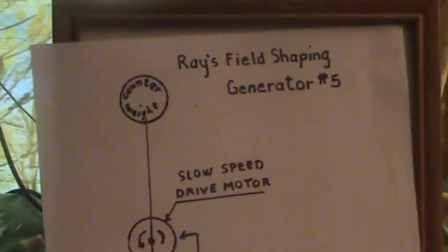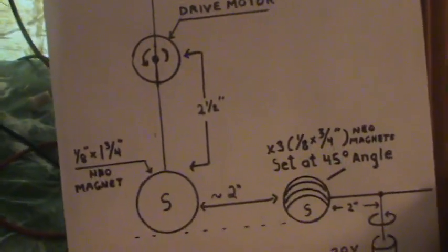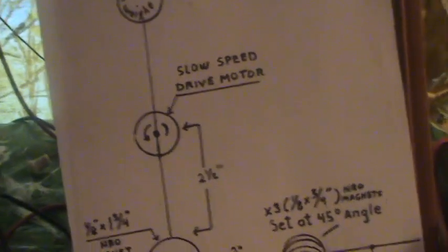We'll get an aerial view one more time to see how it's set up. This is my little run motor — it's a small mini motor, the same as the generator motor that I'm using. I have a hard time finding something like that, but if you've got something in the ballpark. I hope you enjoyed this — you can see the diagram one more time. This is Ray's Field Shaping Generator 5. Have a good day.